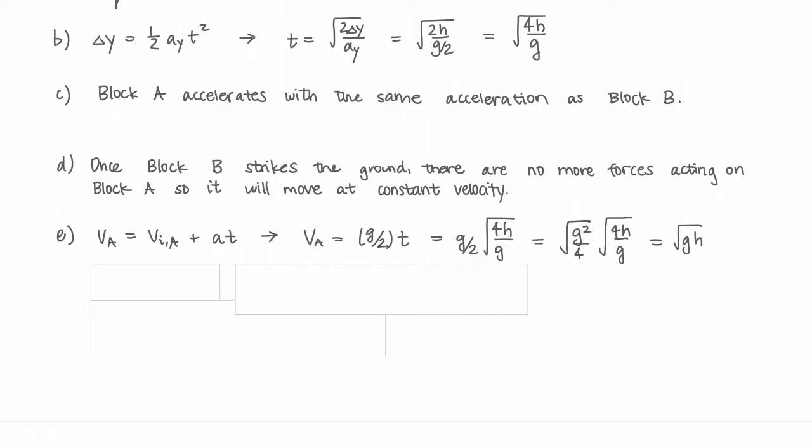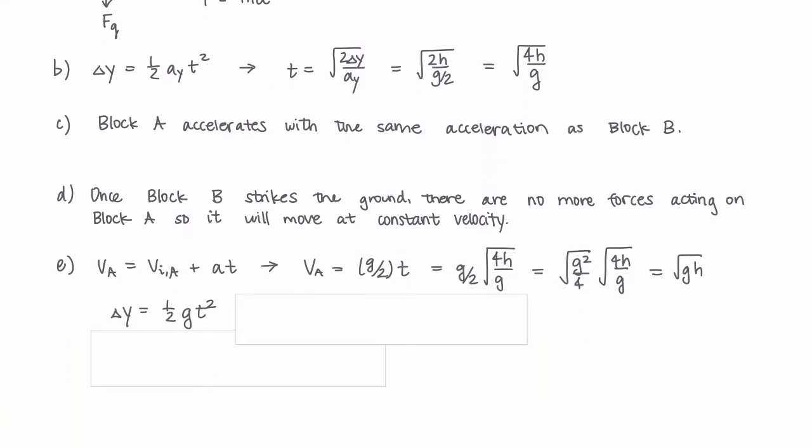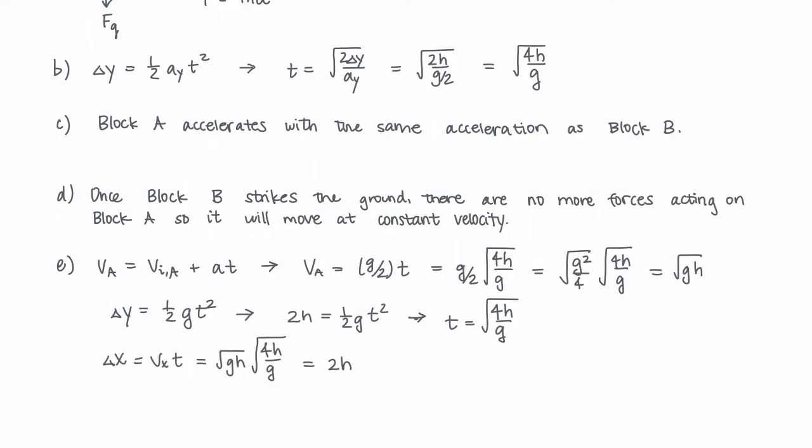Next, we need to find how long block A is in the air. Using the same equation from part B: Δy equals half g t squared. I used g this time because it's falling on its own, not with the acceleration from part A. The change in height for block A is 2h equals half g t squared. Solving for t gives the square root of 4h/g, coincidentally the same as part B. Distance equals velocity times time, which gives us 2h.